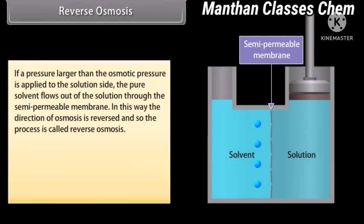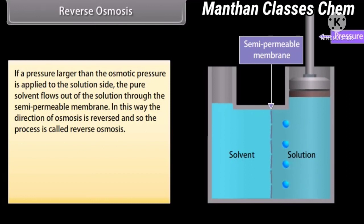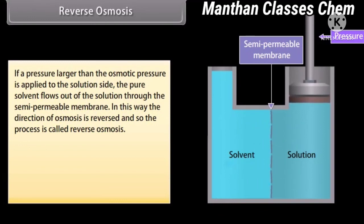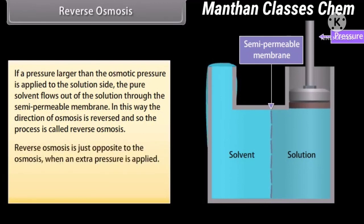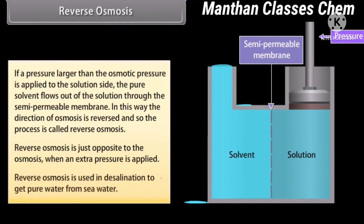Reverse Osmosis: If a pressure larger than the osmotic pressure is applied to the solution side, the pure solvent flows out of the solution through the semi-permeable membrane. In this way the direction of osmosis is reversed, so the process is called reverse osmosis. Reverse osmosis is used in desalination to get pure water from sea water.